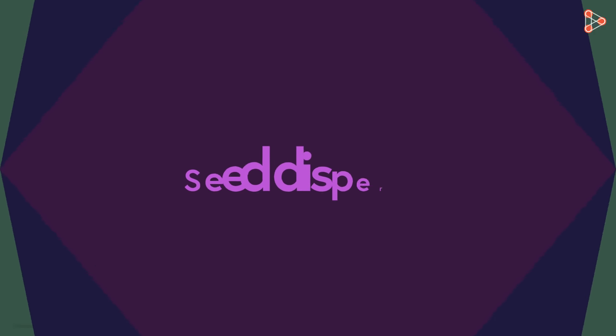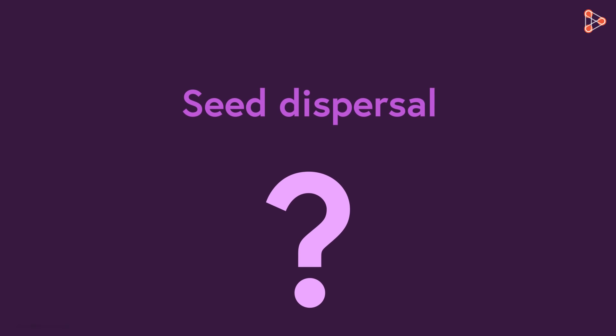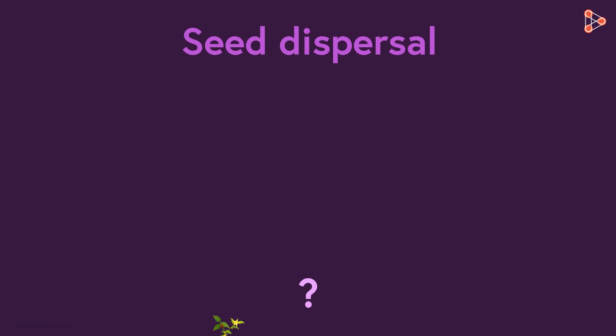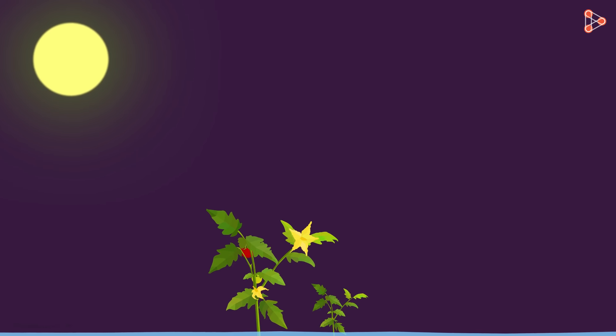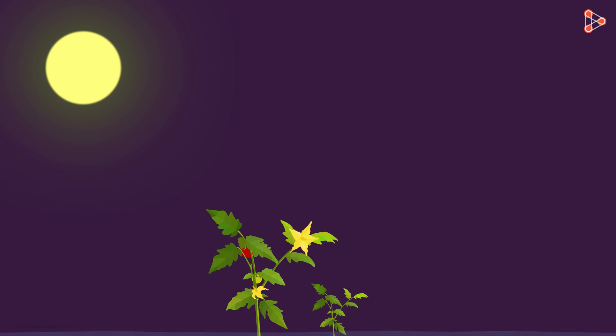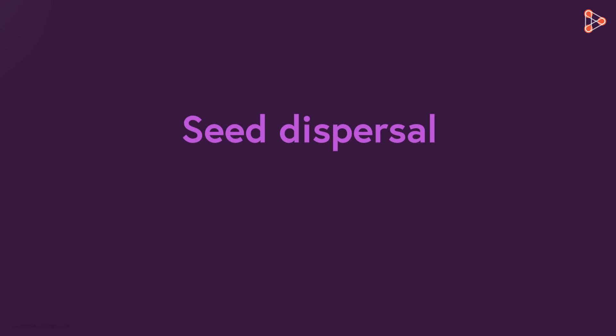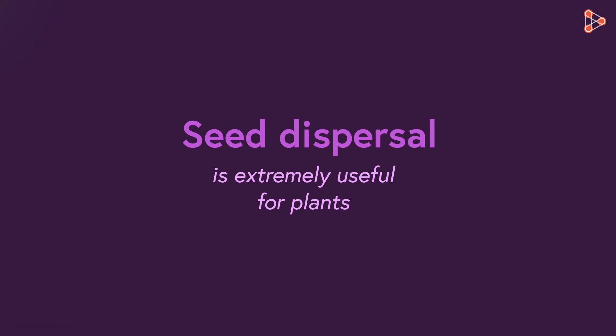Why do we need this dispersal process? What will happen if seeds from the parent plant get planted near it? Being near the parent plant would severely affect the growth and development of both plants, because the two will start competing for sunlight and water. That is the reason why seed dispersal is extremely useful for plants.